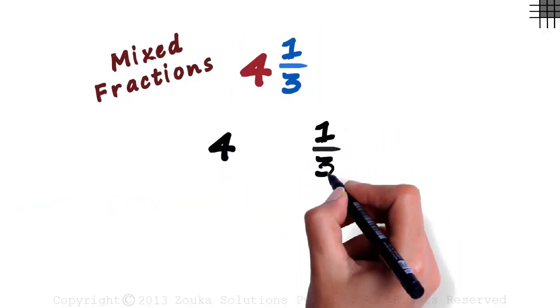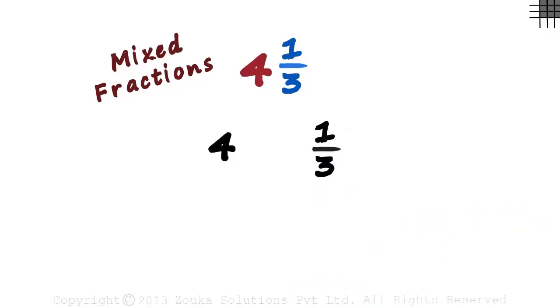1 by 3 is a proper fraction. A proper fraction is a fraction in which the numerator is less than the denominator. This mixed fraction is simple to understand. It's the sum of these two parts: the whole part and the fractional part.